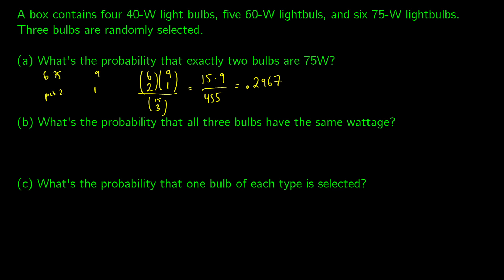What's the probability that all three bulbs have the same wattage? There are a few ways this can happen. We have four 40-watt bulbs, so we could pick three of those and none of the rest — that's four choose three times 11 choose zero. Because these events are independent, we use a plus between them.